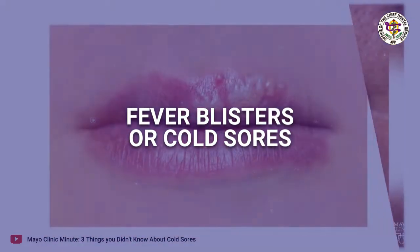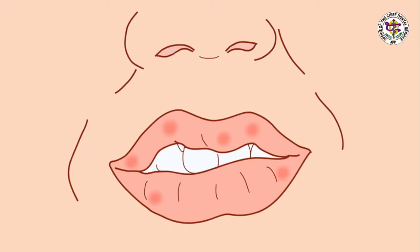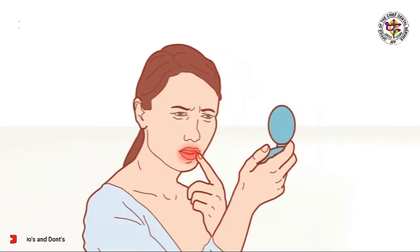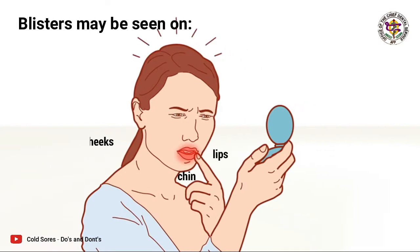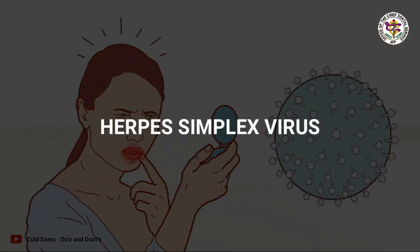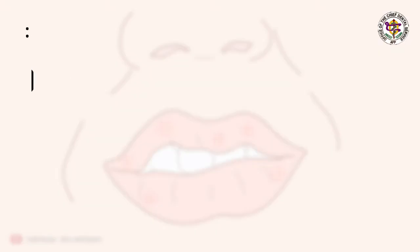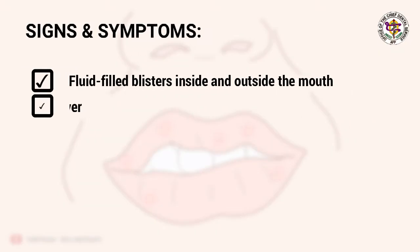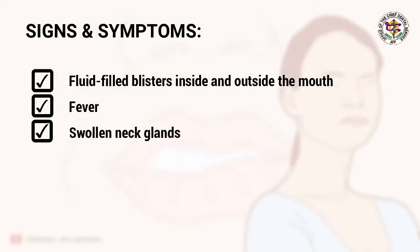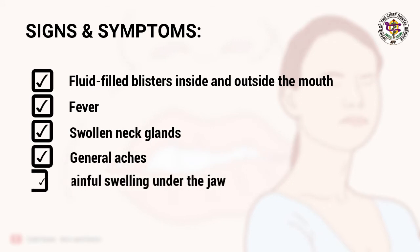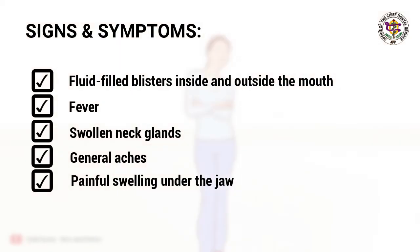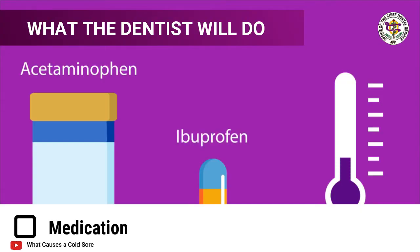Fever blisters are painful fluid-filled blisters or cold sores that usually occur outside the mouth on the lips, chin, cheeks, or in and on the nostrils. They are caused by a contagious virus called herpes simplex. Signs and symptoms include fluid-filled blisters inside and outside the mouth appearing three to five days after infection, fever, swollen neck glands, general aches, and painful swelling under the jaw.